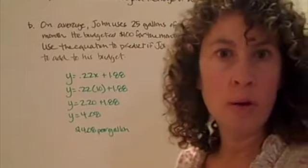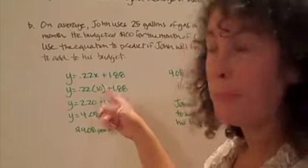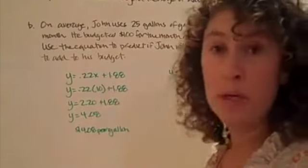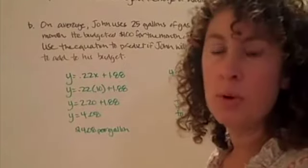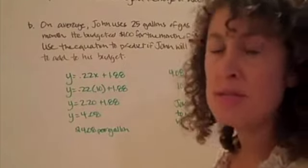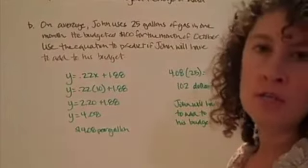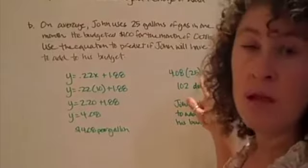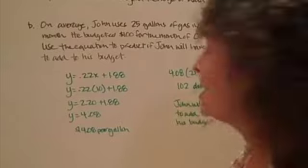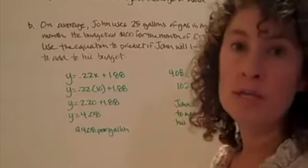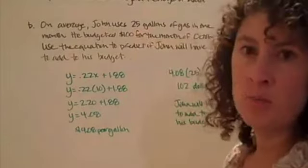We're going to drag our equation from our situation into this. I'm going to use 10 since we're talking October. I come up with $4.08 as the cost per gallon in October. He uses about 25 gallons of gas per month. He's going to spend about $102 for his gas in October. He only budgeted $100, so he's going to have to add to his budget.